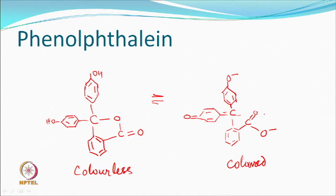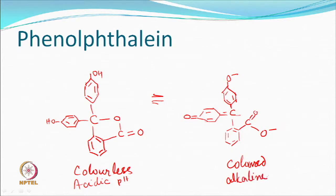For example, phenolphthalein, which you must have used as an indicator — in acidic medium it is colourless, and in alkaline medium it is pink. If you see the structure, there is a double and single bond, then double bonds continuing. But at some point it starts breaking — it is all single bonds with no conjugation easily available. So if conjugation is broken, this becomes a problem.